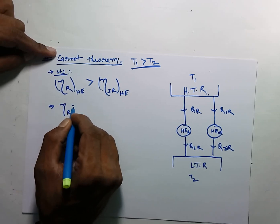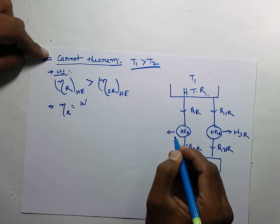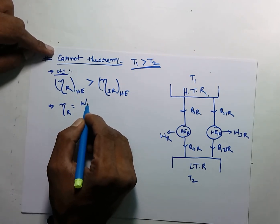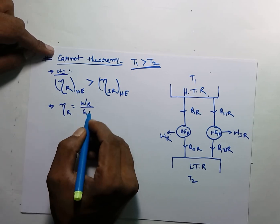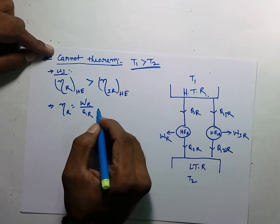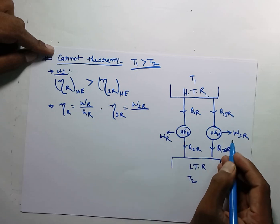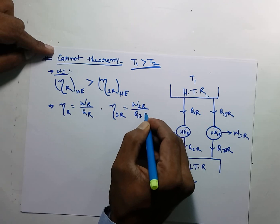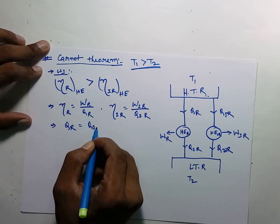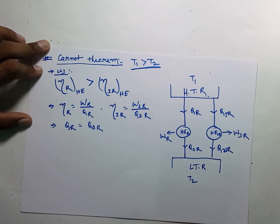So let me first prove this statement. The efficiency of the reversible heat engine equals WR divided by QR, and the efficiency of the irreversible heat engine equals WIR divided by QIR. To prove this statement, let's assume that QR is equal to QIR, because both heat engines are taking heat from the same temperature limit T1.